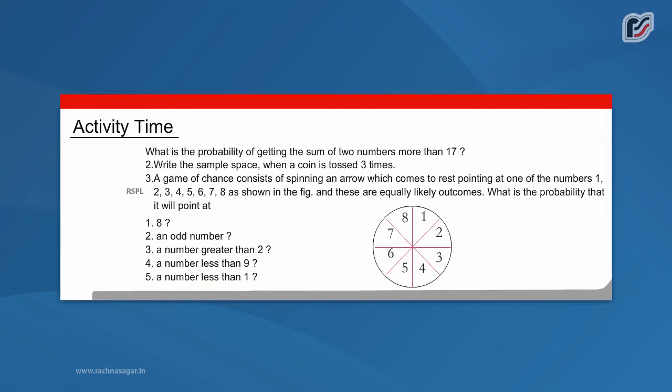Activity time: What is the probability of getting the sum of two numbers more than 17? Write the sample space when a coin is tossed 3 times.